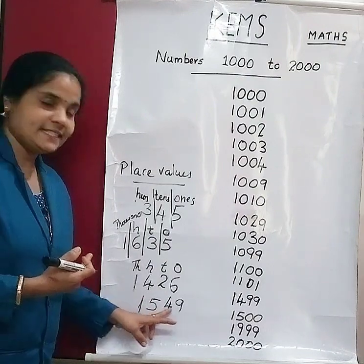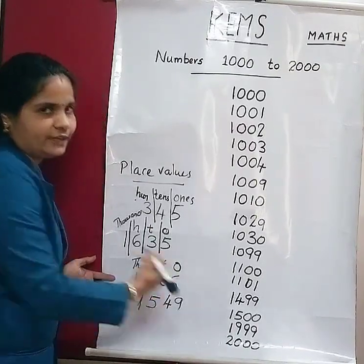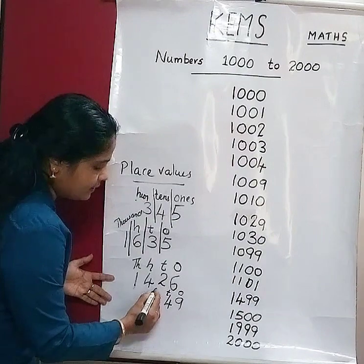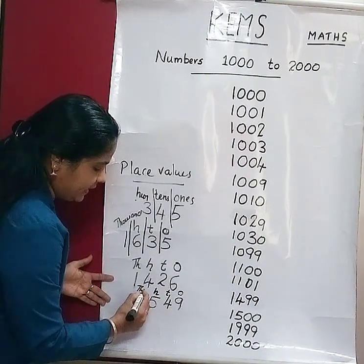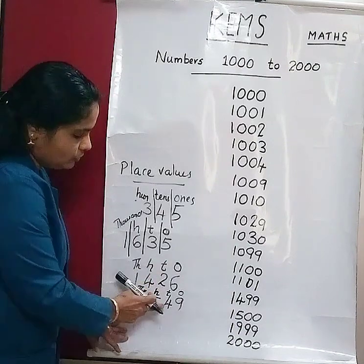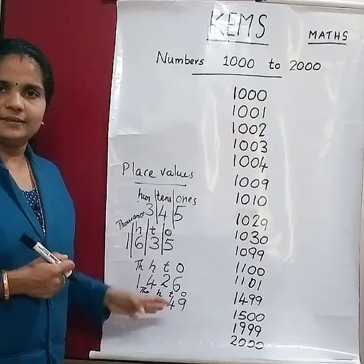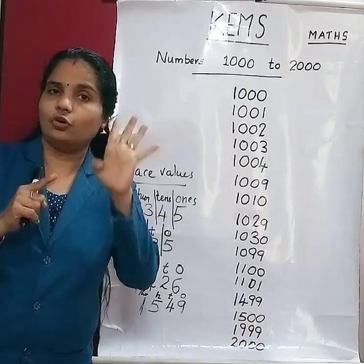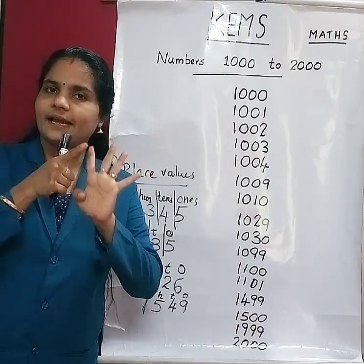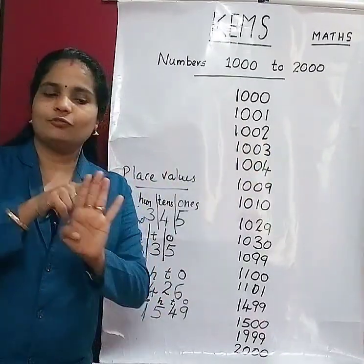So, how can we read these numbers? Take 1549. 9 is the 1s place, 4 is the 10s place, 5 is the 100s place, and 1 is the 1000s place. Clear. So we studied the 4 place values: 1s, 10s, 100s, and 1000s.